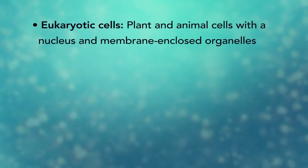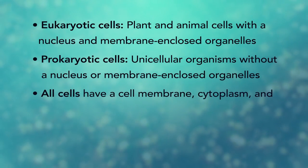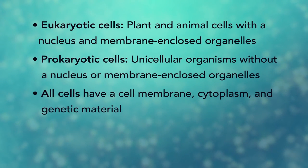In summary, remember, eukaryotic cells are plant and animal cells with a nucleus and membrane-enclosed organelles, while prokaryotic cells are unicellular organisms without these things. All cells have a cell membrane, cytoplasm, and genetic material.